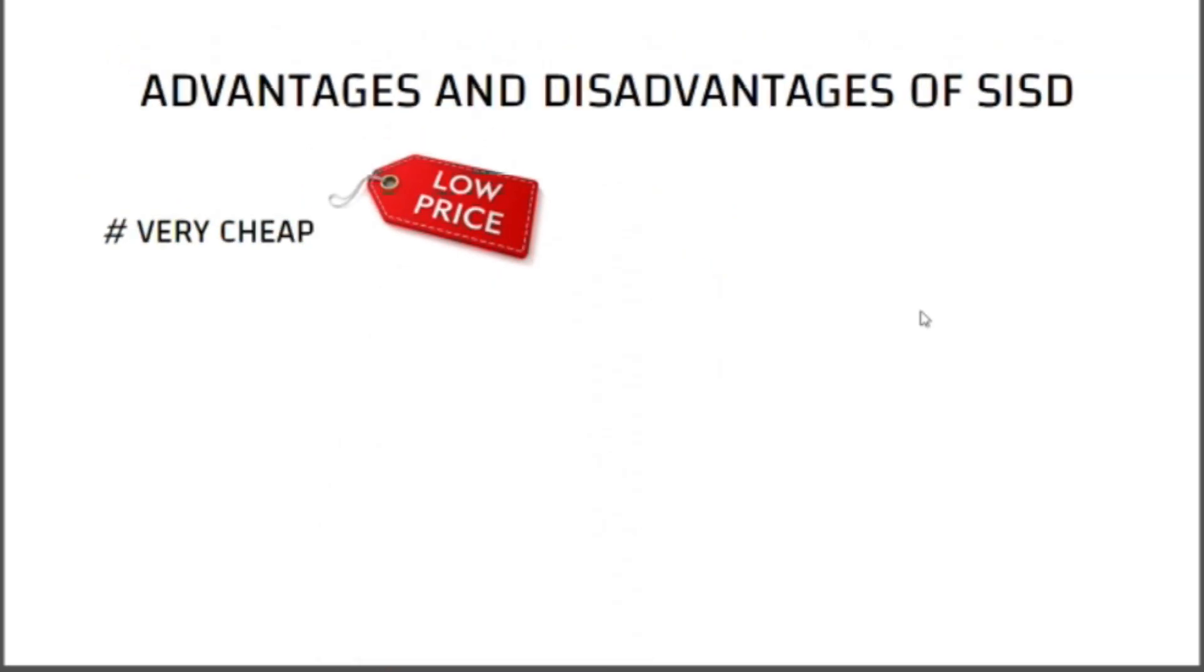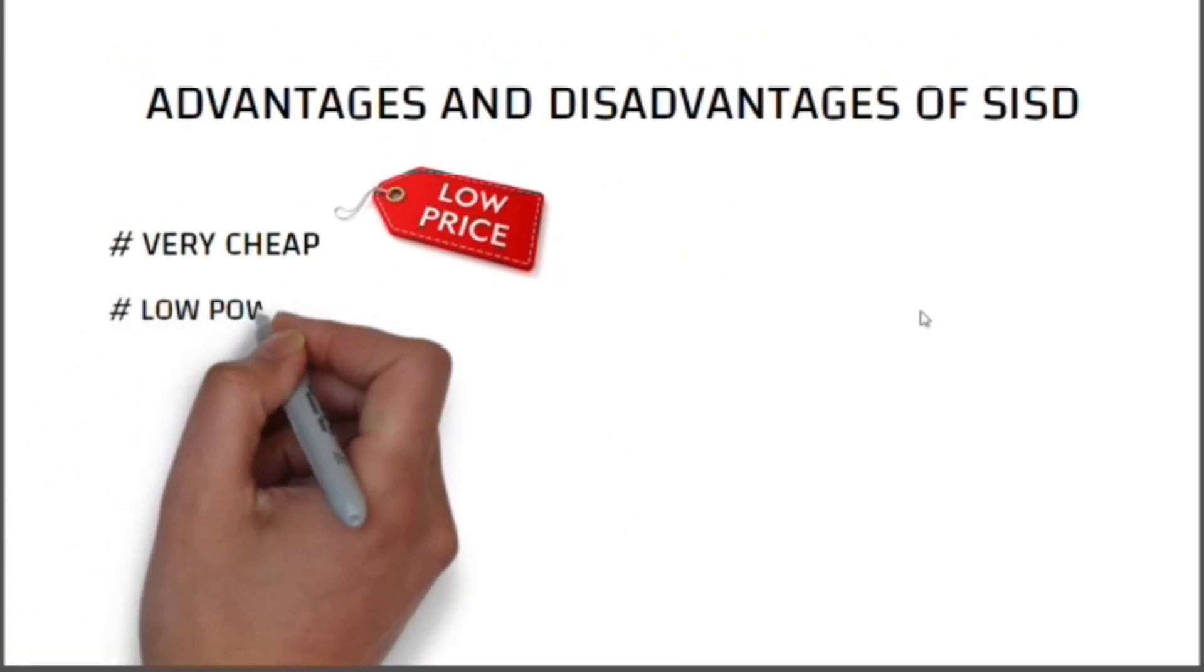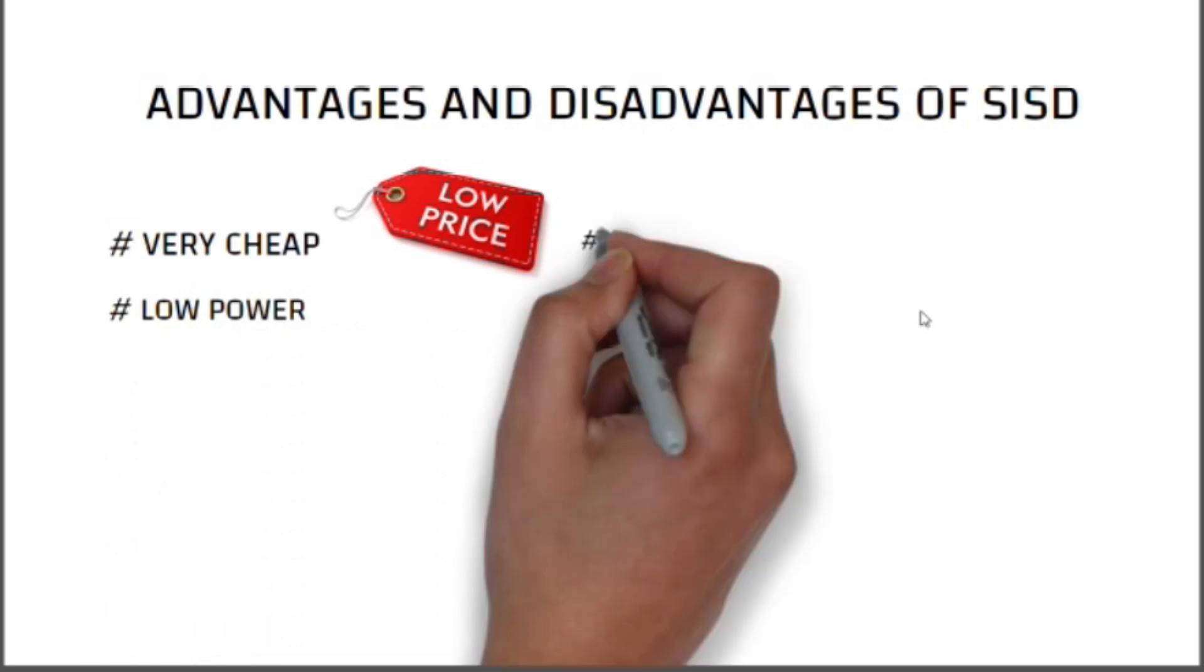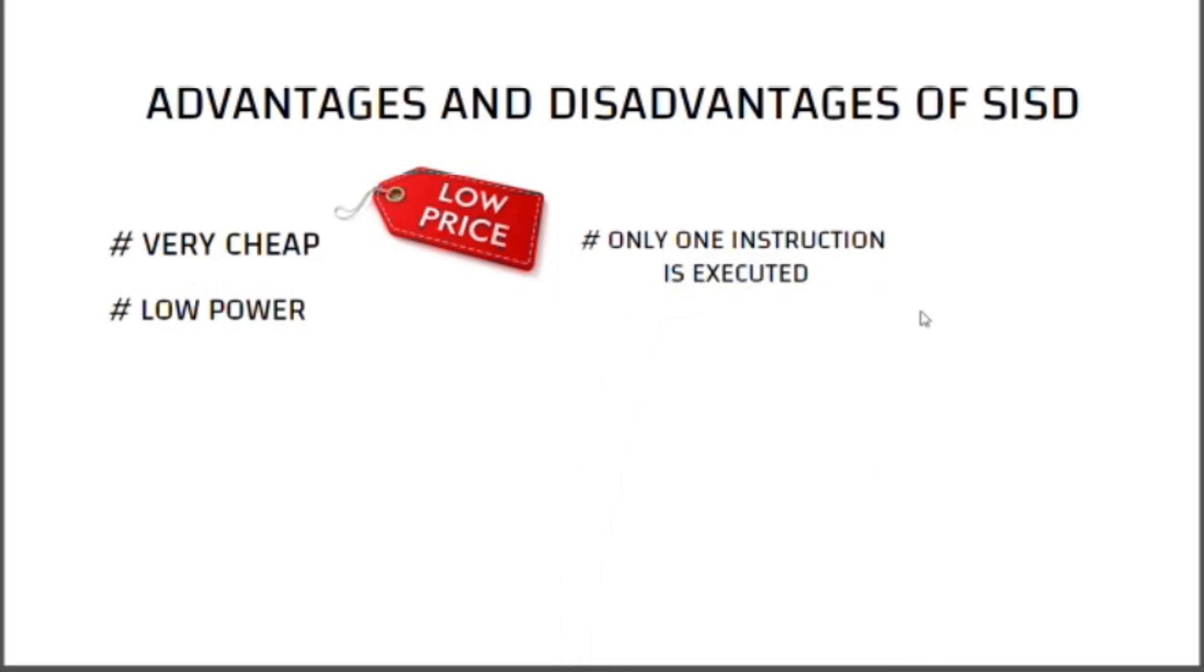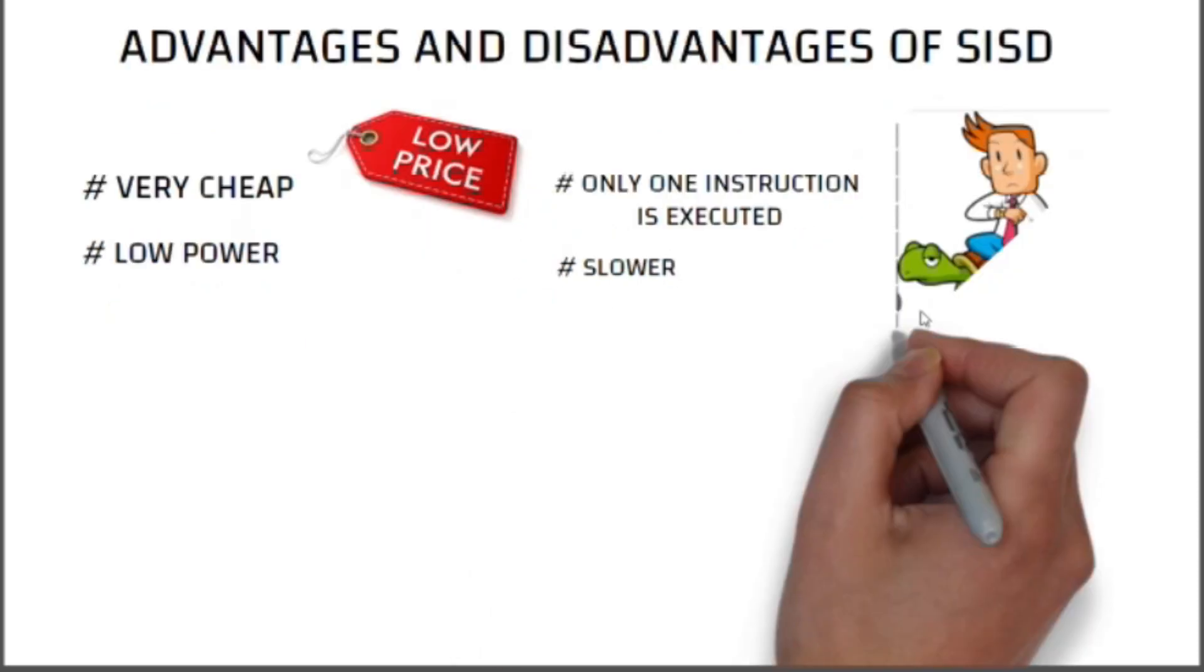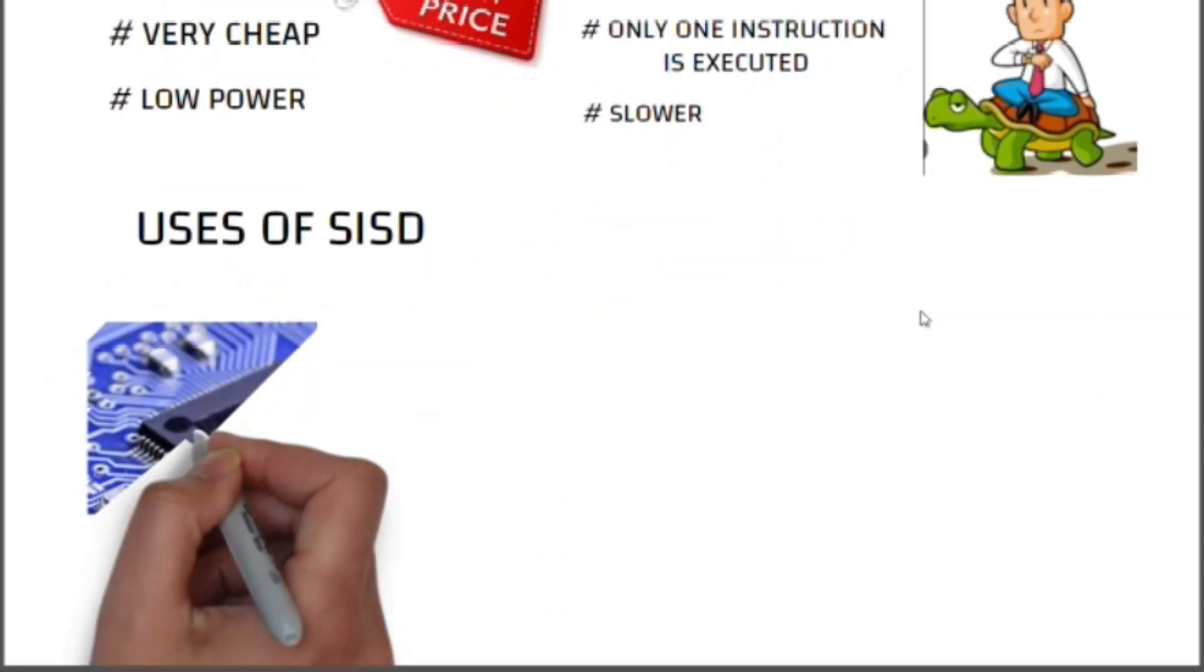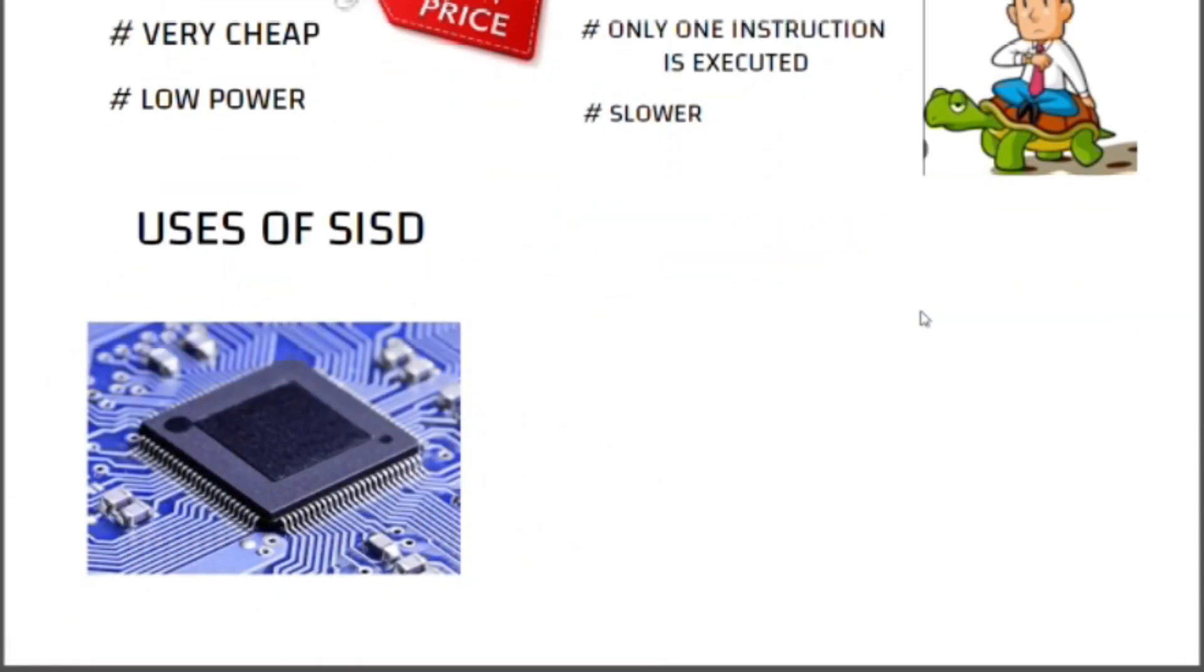Disadvantages of SISD: only one instruction is executed at a time, so it is a very slow process. Uses of SISD: they are mainly used for microcontrollers where limited memory is required. They were used in older mainframes of the 1960s and 1970s time.